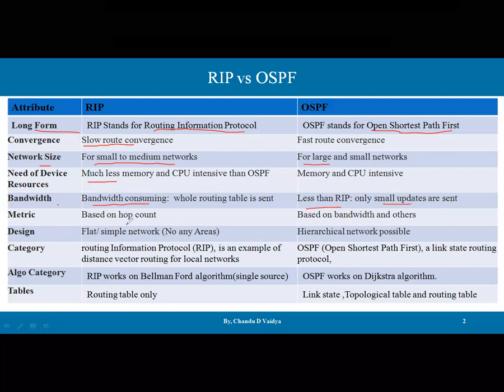The metric in RIP is based on hop count — if the number of hops is less, that path is preferred. This metric is used to choose which path is best. In OSPF, the metric is based on bandwidth and other parameters such as speed, cost, and congestion.